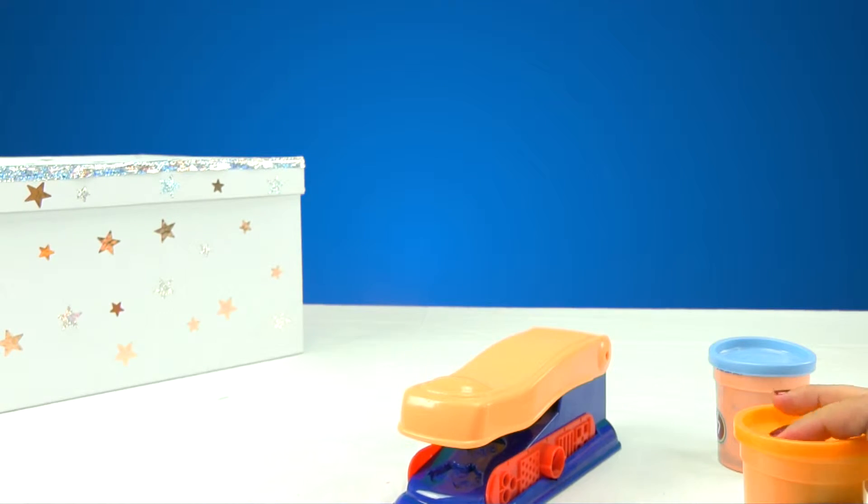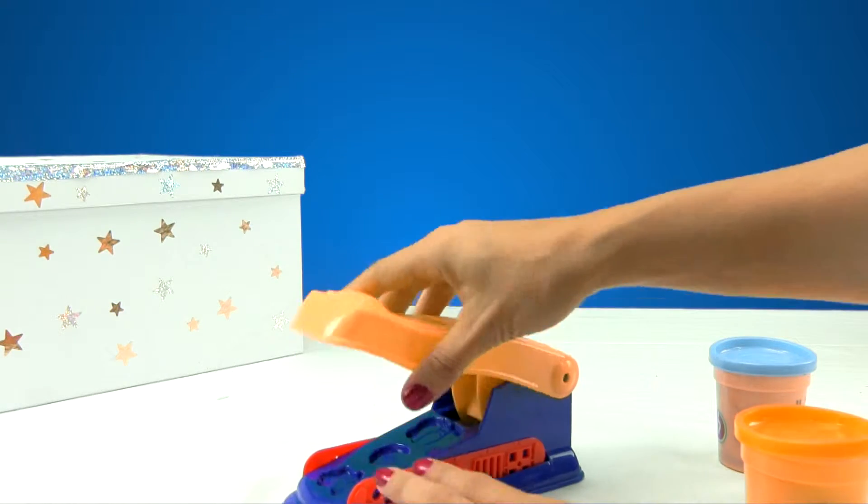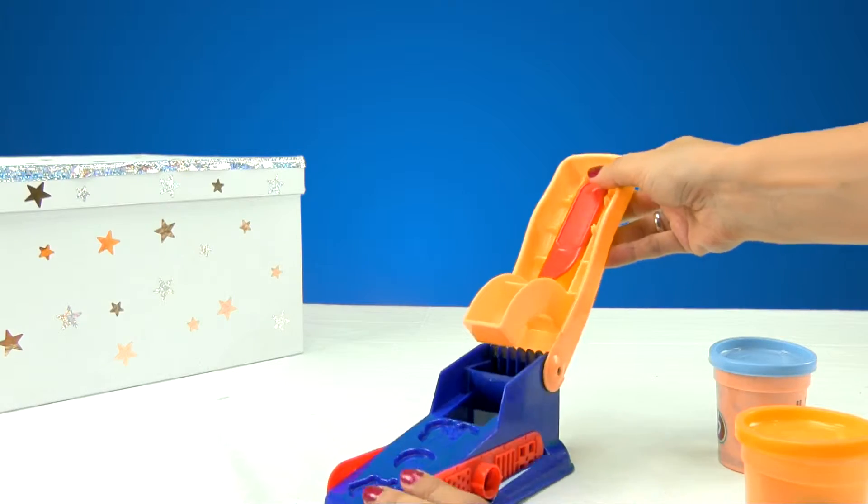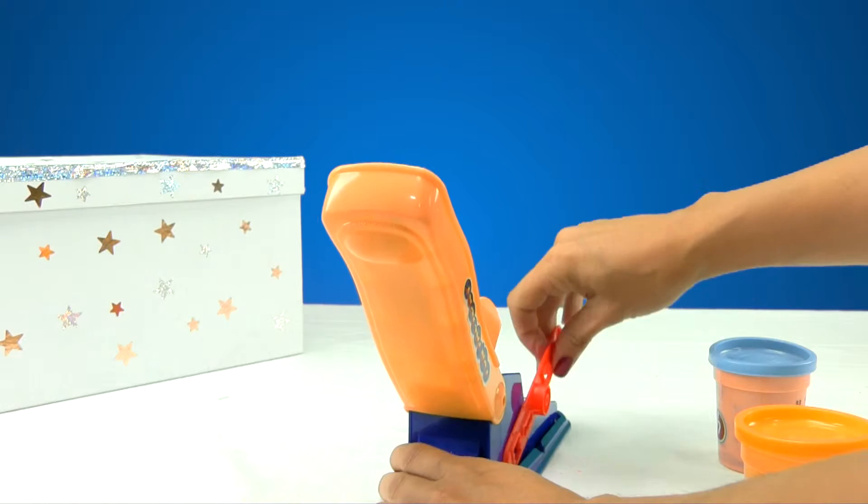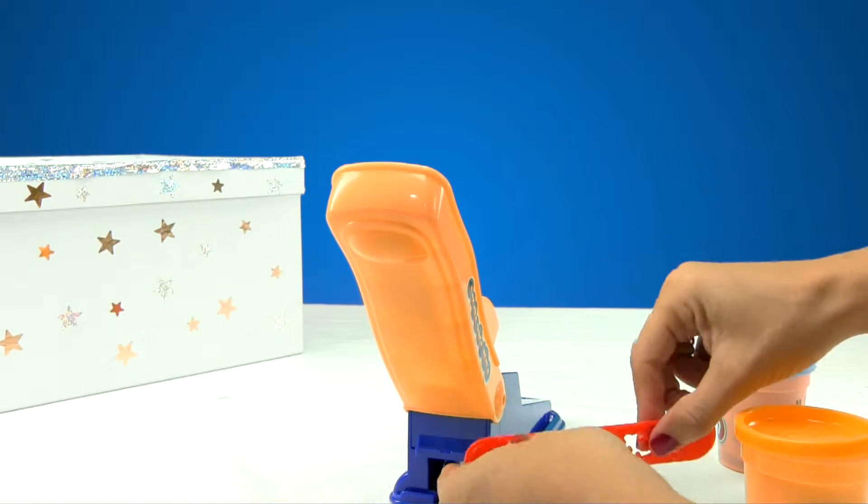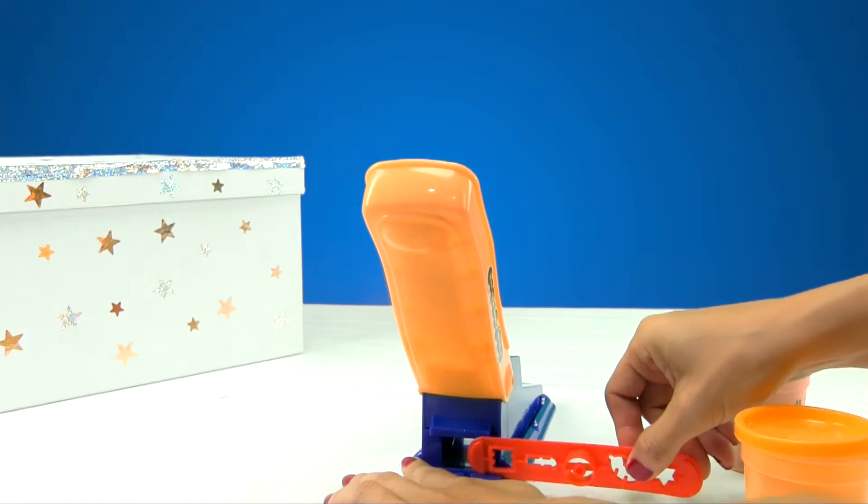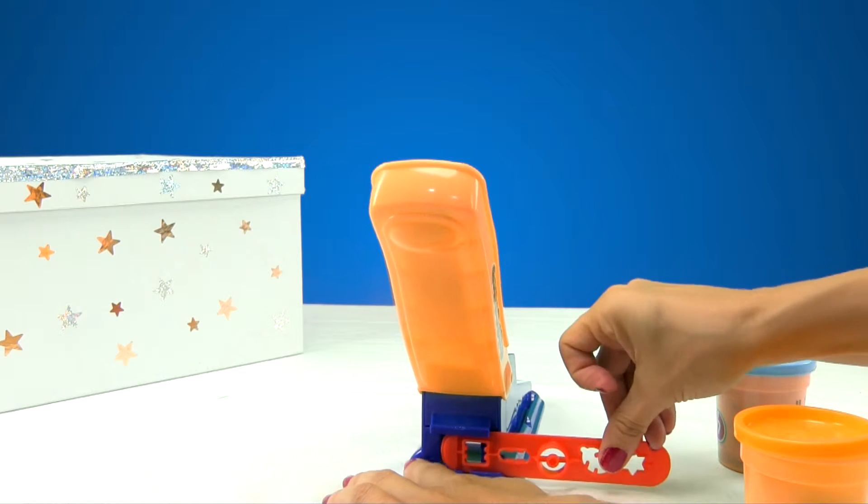And this other one, this one's orange. And if we mix the two colors, will it come out in two colors like the picture on the box? Why don't we try it? I'll open it this way. I'm going to put one of the molds on. What do you say we start with an easy one?